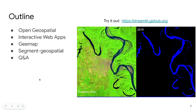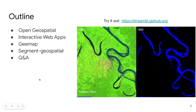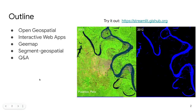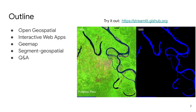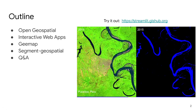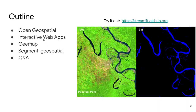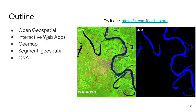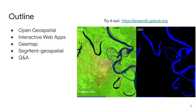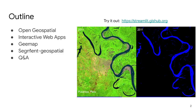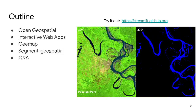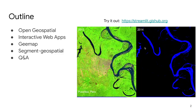Here is the outline: first I will talk about some of the open geospatial packages that I have built, and then I will show you some examples of how to make them accessible through an interactive web app. I'll highlight two open source packages that I have built: geemap and segment-geospatial.